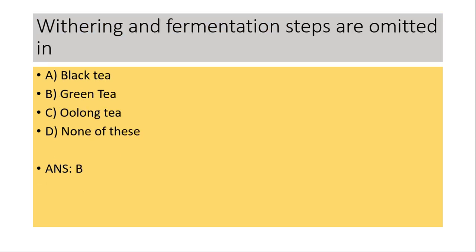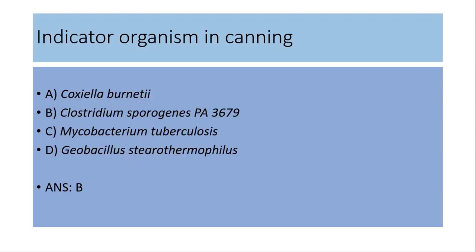Withering and fermentation steps are omitted in: (a) black tea, (b) green tea, (c) none of these. The answer is (b) green tea. Withering and fermentation steps are absent or omitted in green tea.